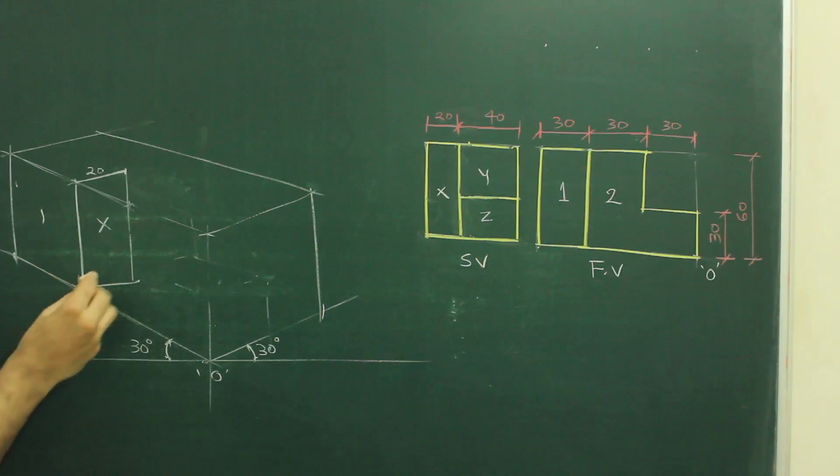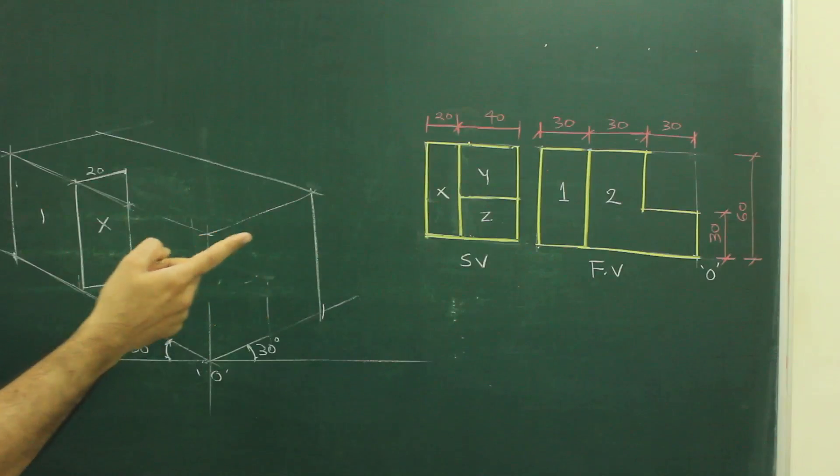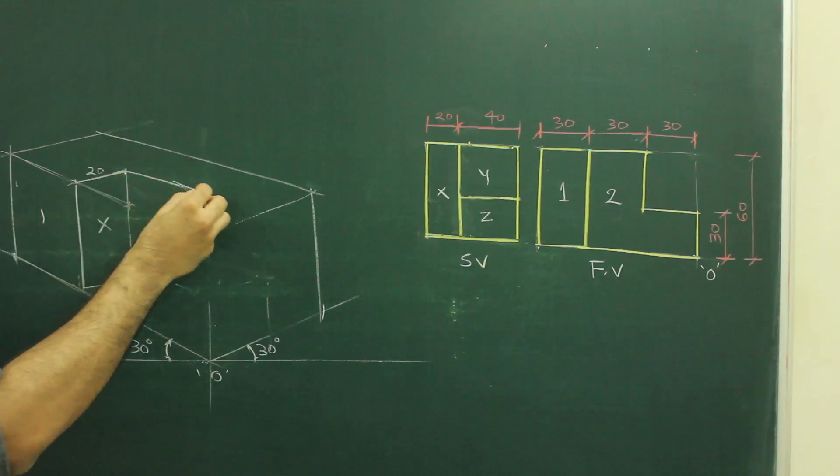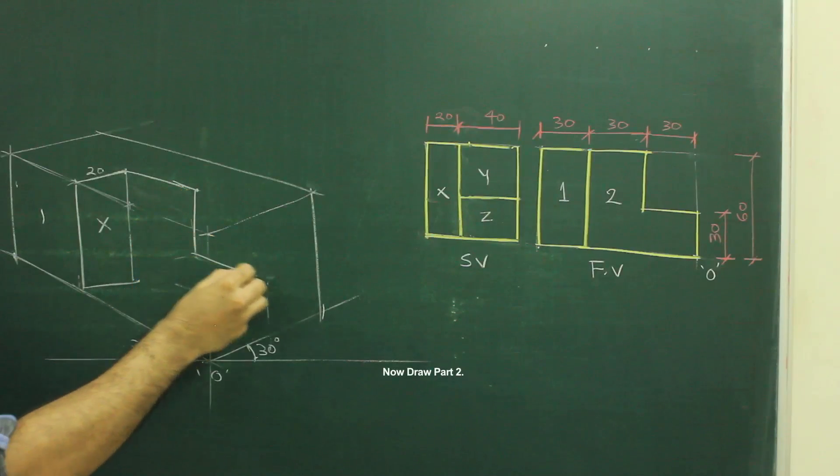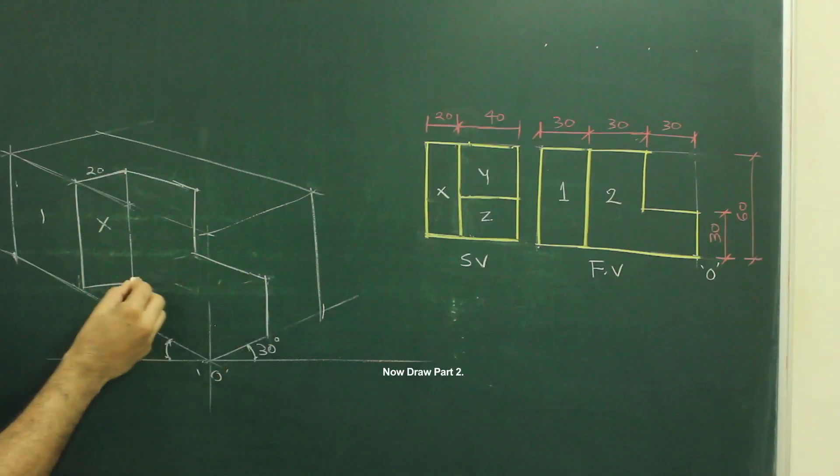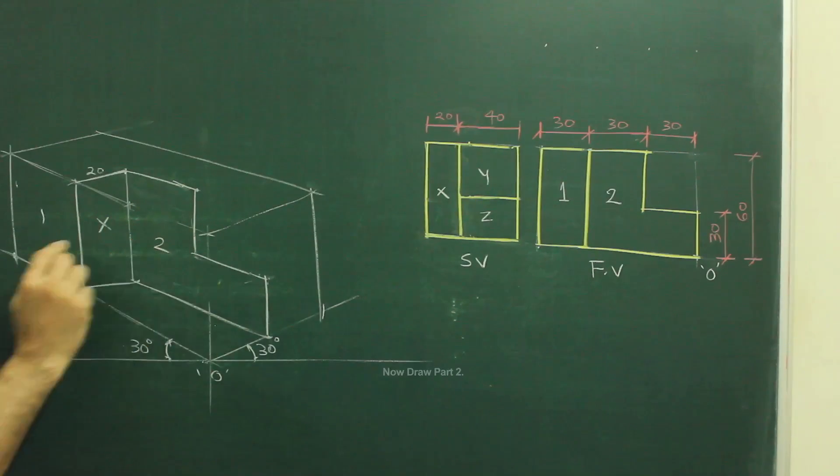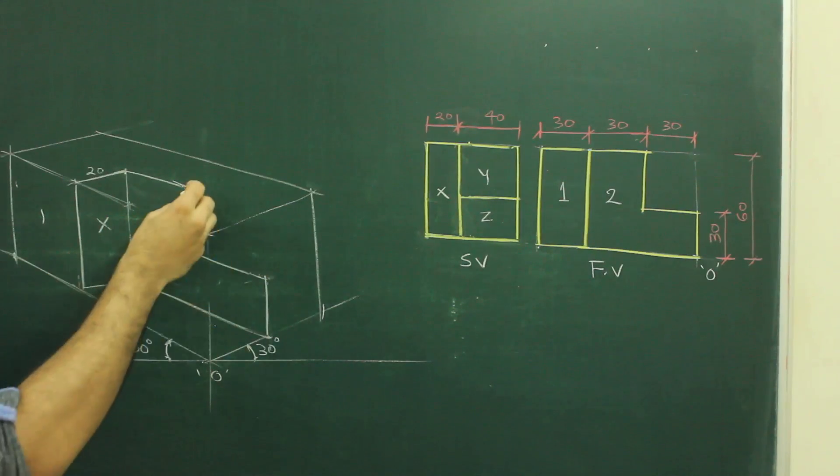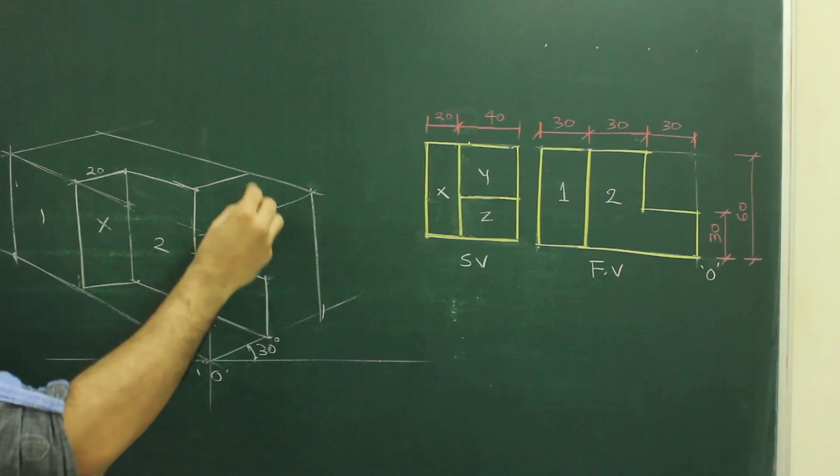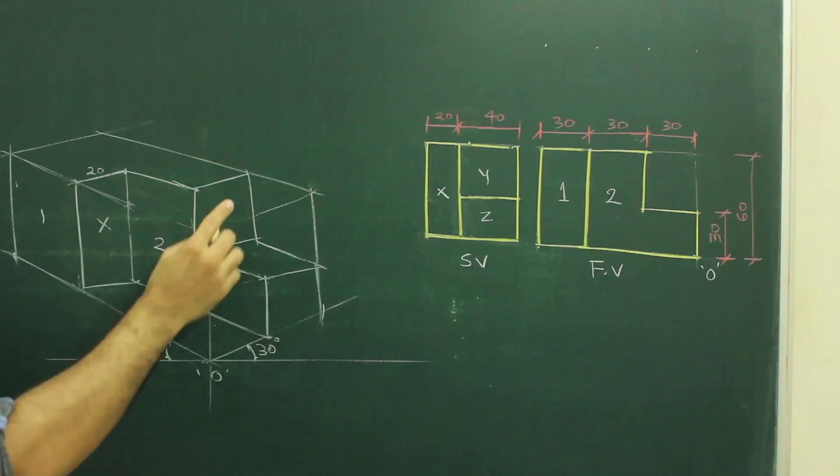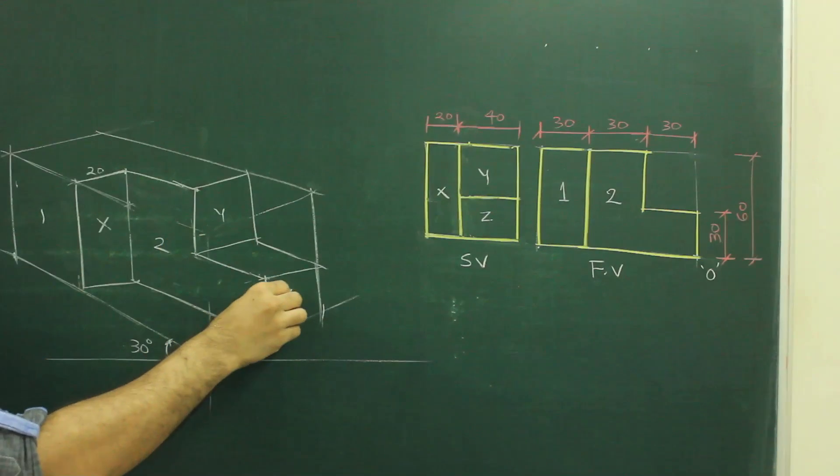Now after that, now if I will start part 2 which is there in front view, how much I have to come ahead? 30. Then go down, then again go outside, again come down and join this. So now what I have drawn is part 2. And now if I see side view, I have to just draw this behind, take this point behind. So I am getting side view also, part Y and Z.